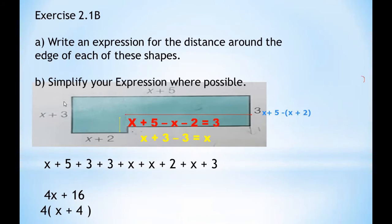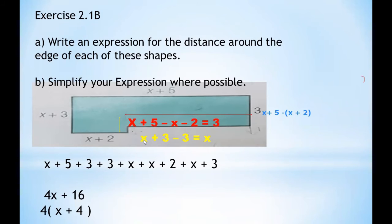Now we need to find the tiny missing side. The full horizontal length on that side is x+3, and the known portion is 3. So we subtract: (x+3) minus 3. The +3 and -3 cancel, leaving x. So this tiny side equals x.